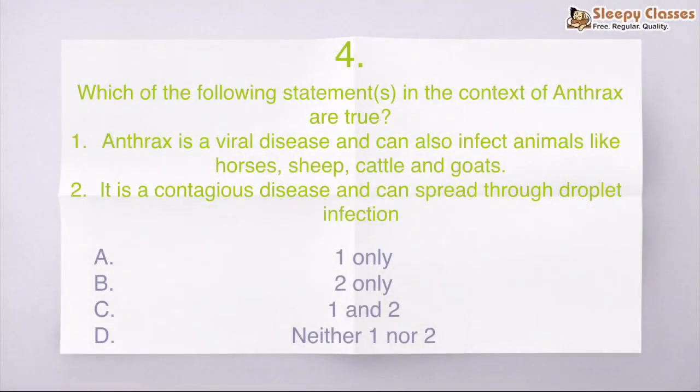Which of the following statements in the context of anthrax are true? So first statement: anthrax is a viral disease and can it infect animals like horses, sheep, cattle and goats? Second statement: this is a contagious disease. So you can pause and the correct answer is D.